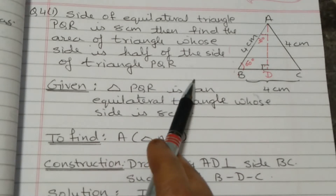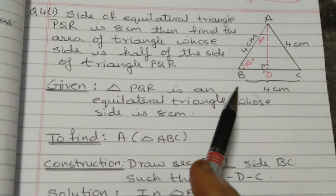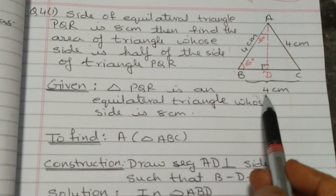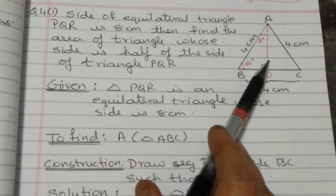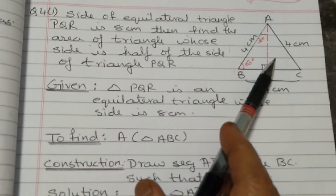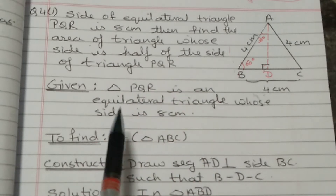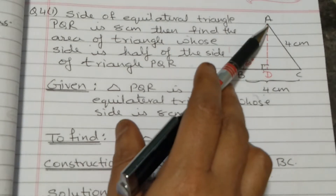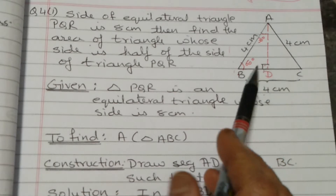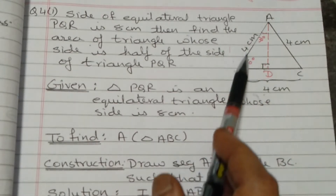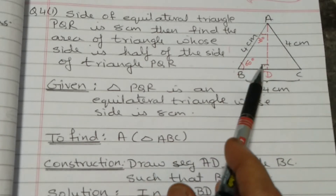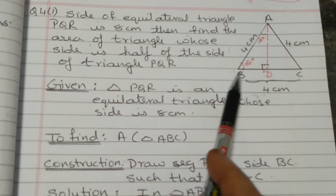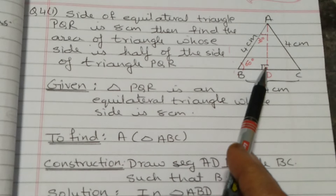In Method 2, the area of a triangle equals half into base into height. Here, base BC is 4 cm, but the height is not known, so we first find the height. Construction: draw AD perpendicular to BC. In triangle ADB, angle ADB is 90 degrees by construction.